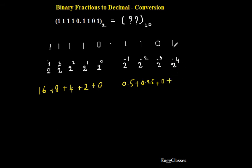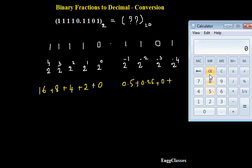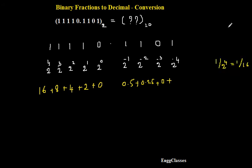Similarly moving on further, 1 into 2 to the power minus 4. What is 2 to the power minus 4? It can be written as 1 divided by 2 to the power 4. 2 to the power 4 is nothing but 16. What is 1 divided by 16? Let me make use of the calculator again. 1 divided by 16, that turns out to be 0.0625.